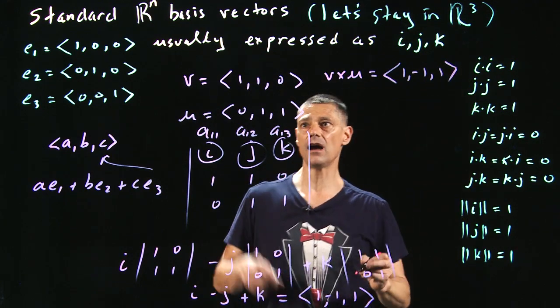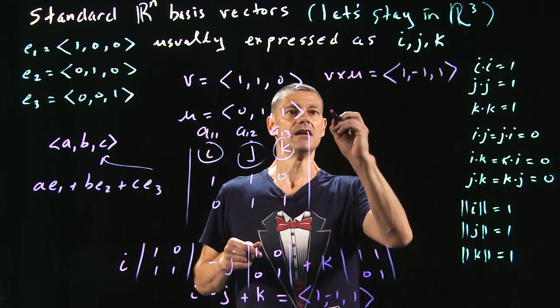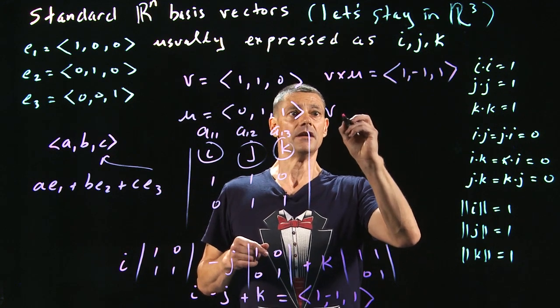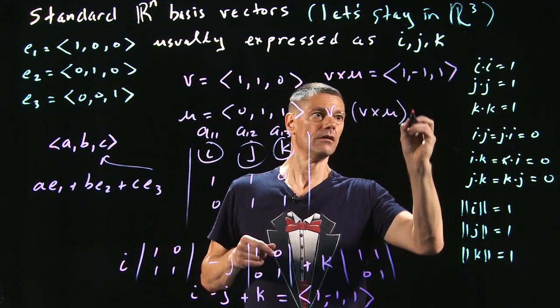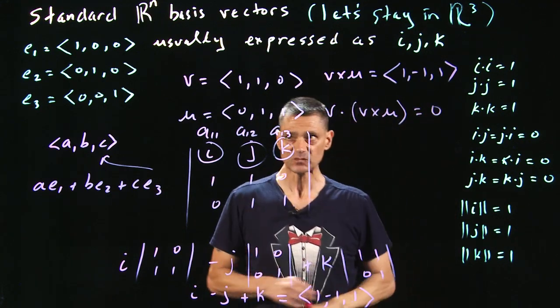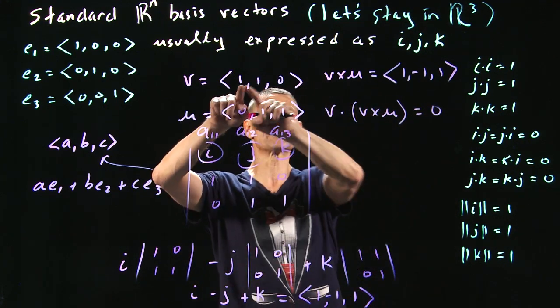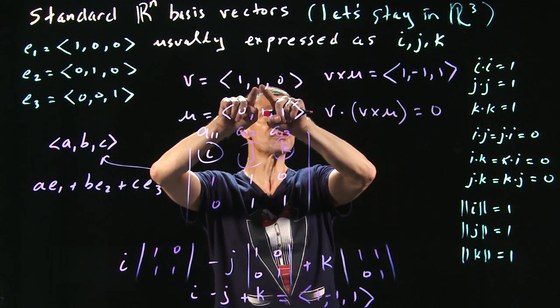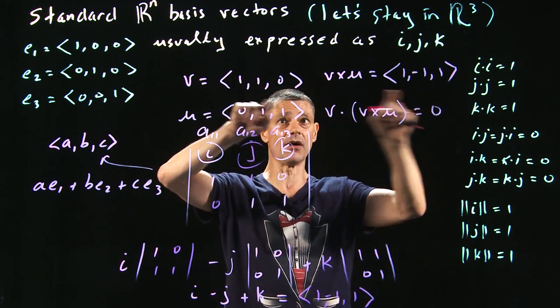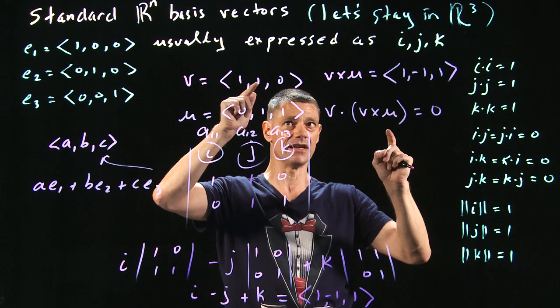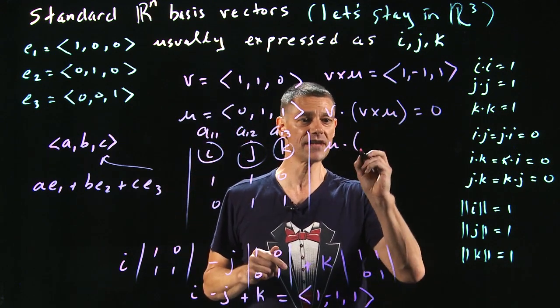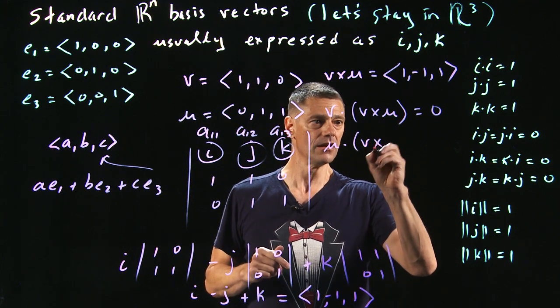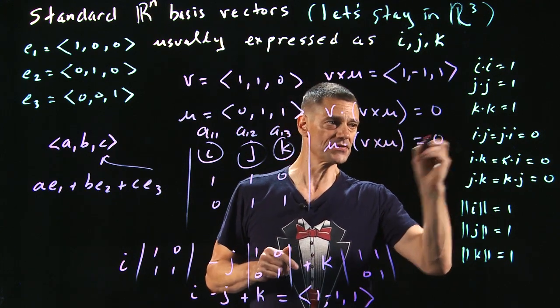If you look at this, so what is v · (v × u)? Well, it's going to be 0 because if you dot these together, it's going to be 1 times 1 is 1 plus 1 times negative 1 is negative 1 plus 0 times 1 is 0. 1 and negative 1 is 0 plus 0 is 0. You'll also find if you do this that u · (v × u) is also 0.